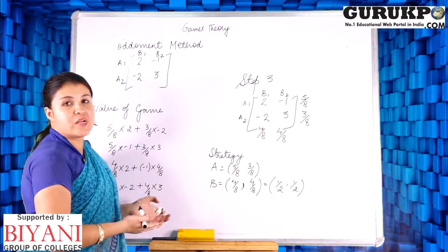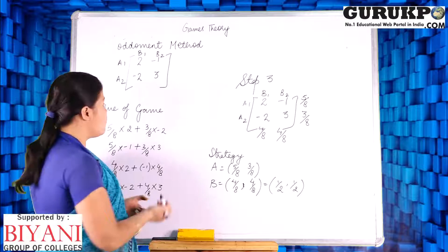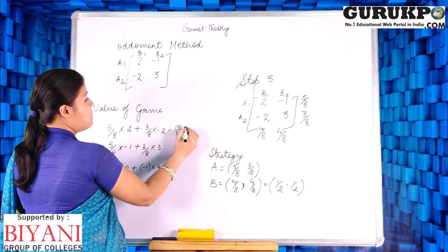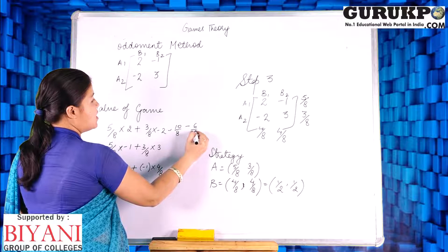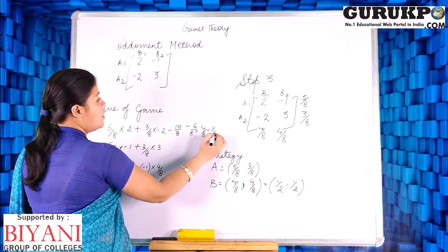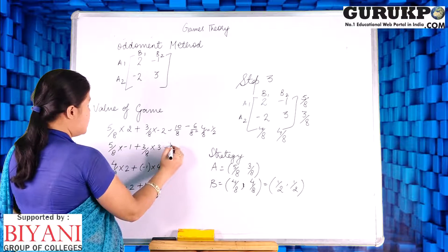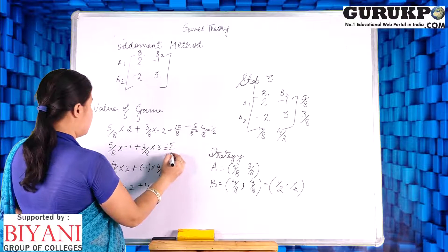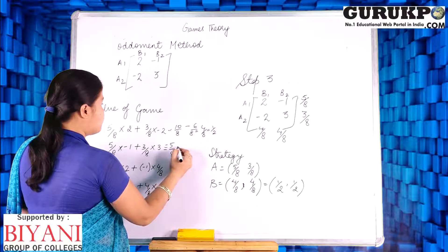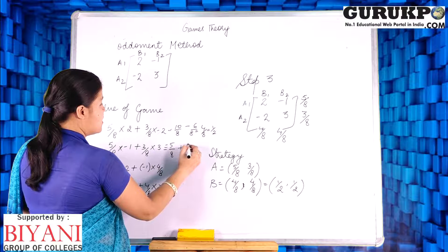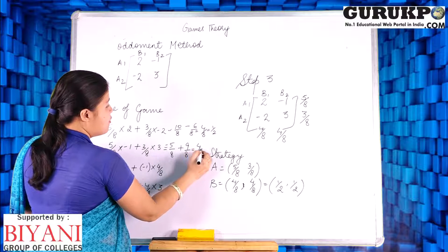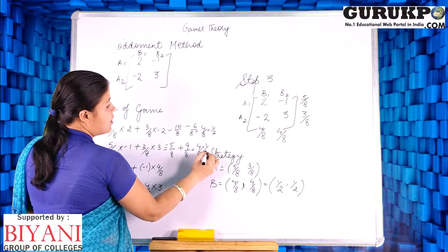In all four methods we will get the same value of the game. Let us check: Method 1 gives 10/8 − 6/8 = 4/8 = 1/2. Method 2 gives −5/8 + 9/8 = 4/8 = 1/2.